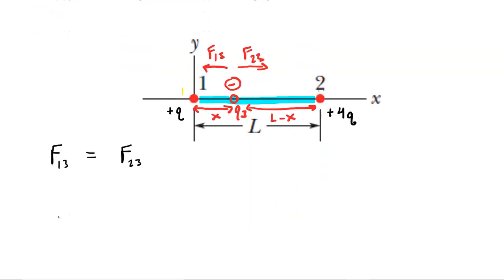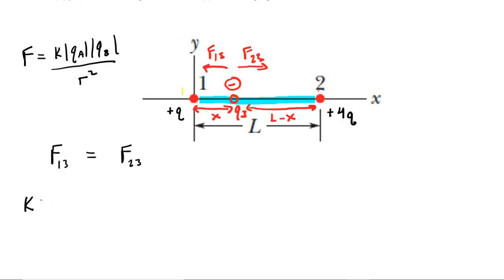Let's fill in those forces using Coulomb's law: the force acting between two charges equals Coulomb's constant multiplied by the magnitude of charge one times the magnitude of charge on the other object, divided by the distance between them squared. For the force between charges one and three, we have K times |Q1| times |Q3| divided by the distance squared. The distance between charges one and three is x, so we have x squared.